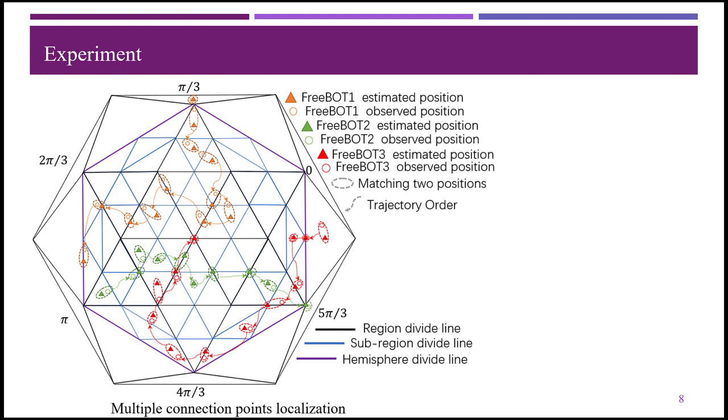The regions are projected to a plane, and the region divide lines are distorted for intuitive visualization. Some observed connection point trajectories in the corresponding localization results of the three connected FreeBots are sampled and plotted on the plane with different colors. The localization results are discretely distributed on the region edges, vertices, and the center of sub-regions.